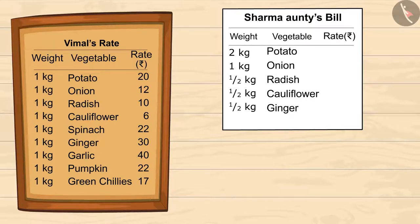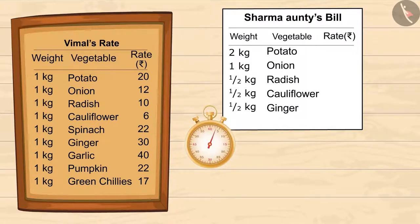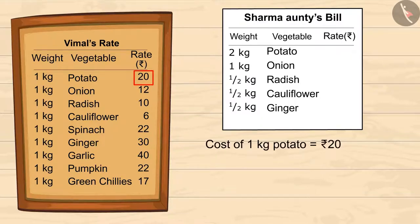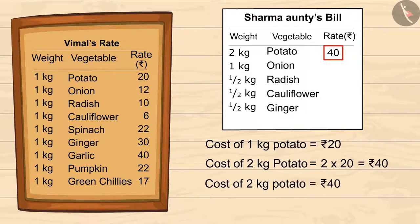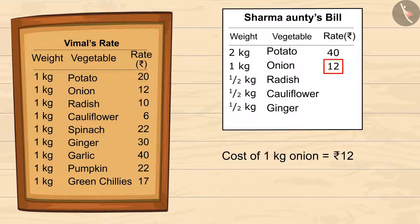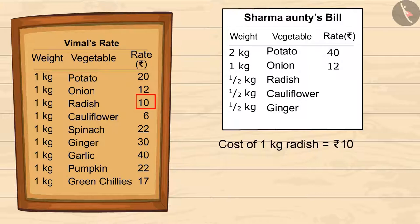You can pause the video and calculate it with the help of Vimal's list. According to Vimal's list, 1 kg of potato costs rupees 20, so 2 kgs will cost 2 multiplied by 20, which means 40. 1 kg onion is 12 rupees. 1 kg radish is 10, so half a kg will be half of that.